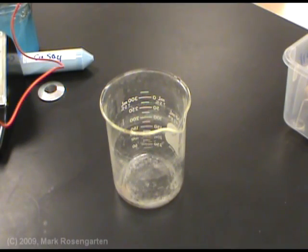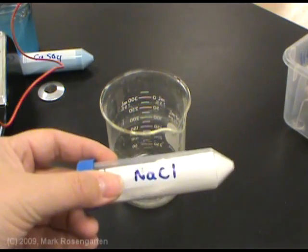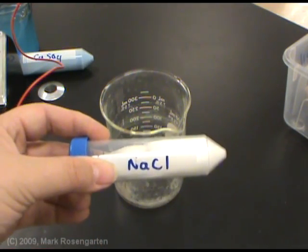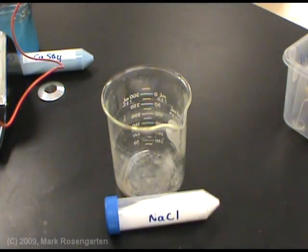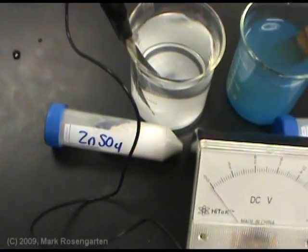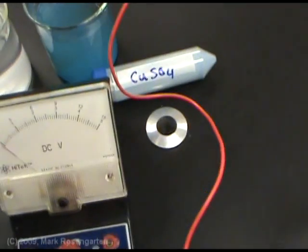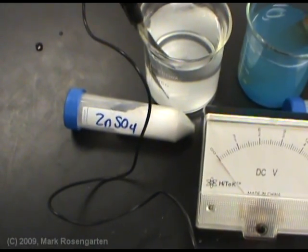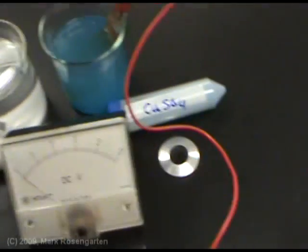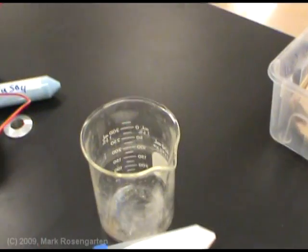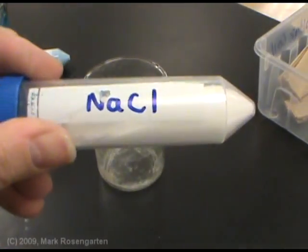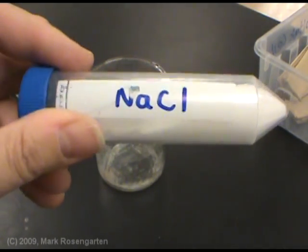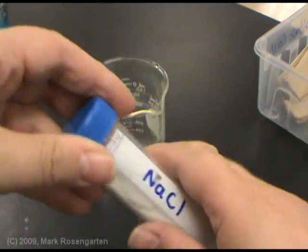To make our salt bridge, what we need is a salt, specifically a salt that has nothing in common with the solutions being used in our voltaic cell. For example, we're using zinc and we're using copper. The sulfate is just a spectator ion. We can't use a zinc salt. We can't use a copper salt. But a sodium salt is perfectly acceptable because it has nothing in common with the reaction and won't interfere with it in the least.